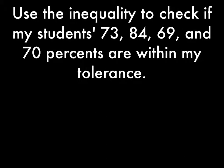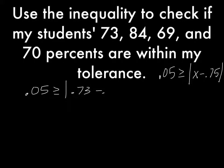So let's use this now. Let's use the inequality to check if my students' 73, 84, 69, and 70 percent were within my tolerance of 5%. So again, my inequality was 0.05 is greater than or equal to absolute value of X minus 0.75. We need to convert all these percents to decimals. So let's just do a couple: 0.05 is greater than or equal to absolute value of 0.73 minus 0.75.